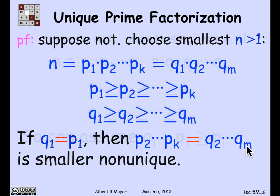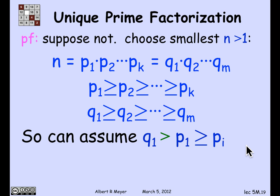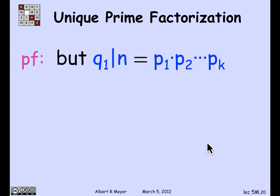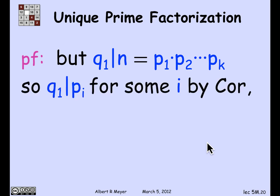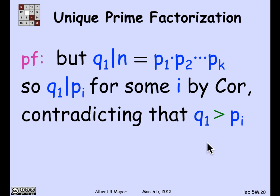So one of them must be greater; we may assume q1 is bigger than p1. Since p1 is greater than or equal to all the other p's, q1 is bigger than every one of the p's. That leads to a contradiction via the corollary: q1 divides n, and n is the product of the p's, so by the corollary q1 must divide pi for some i. But that contradicts the fact that q1 is bigger than pi — a larger number cannot divide a smaller one. We're done, and we have proved the unique factorization theorem.